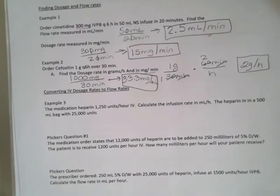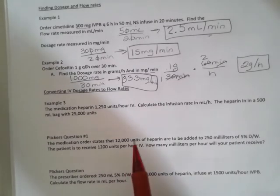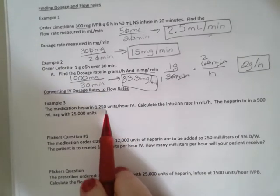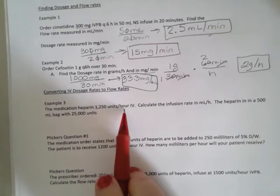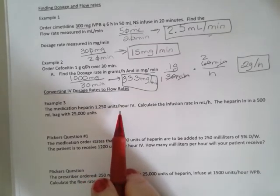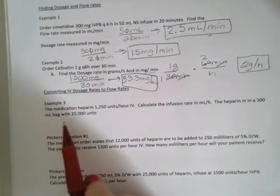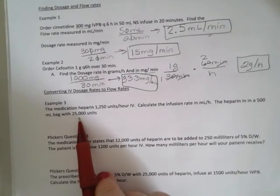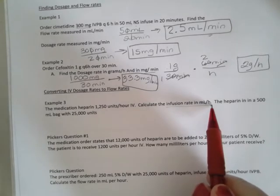In example three, we're looking at heparin. And we're doing IV dosage rates to flow rates. So now we have 1250 units per hour in an IV. That's what we want. Our heparin bag comes in 500 milliliters and has 25,000 units in it. We need to calculate our infusion rate in mLs per hour.